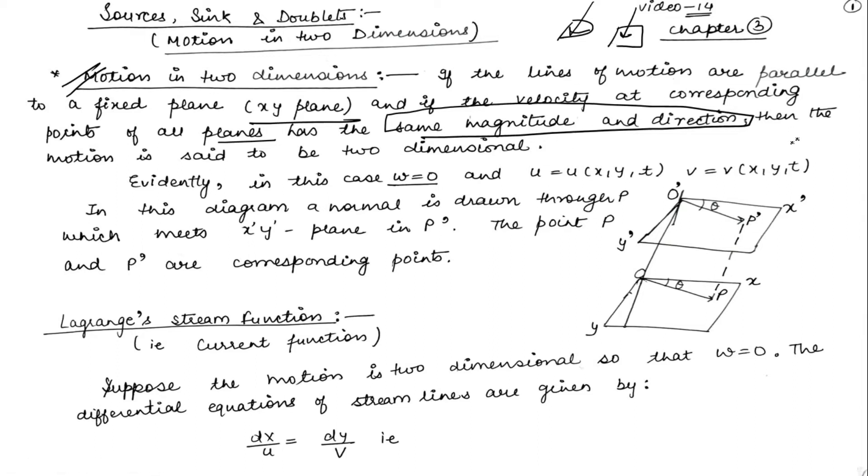then the motion is said to be two-dimensional motion, where the coordinates of velocity are u, v, w.